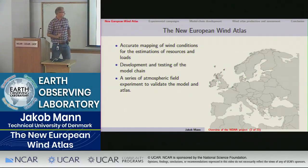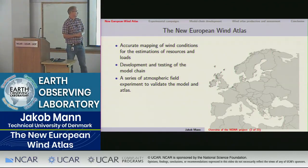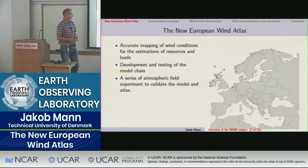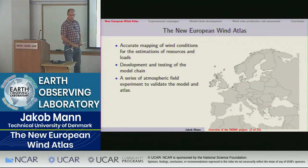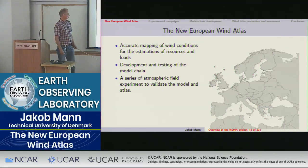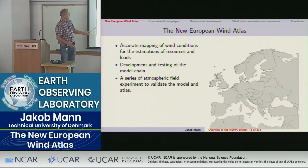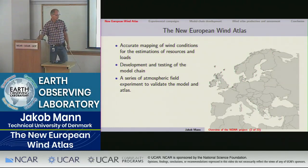The purpose is accurate mapping of wind conditions for resources and, to some degree, loads all over Europe at high resolution and with much lower uncertainty than we usually see. In order to do that we need to develop and test a chain of models, and to verify them we need a series of atmospheric field experiments. In reality those worked more or less in parallel, so much of the field campaign had just ended by the end of the project and couldn't be used to verify the model chain. In the end we used existing data to assess the quality of the Wind Atlas.